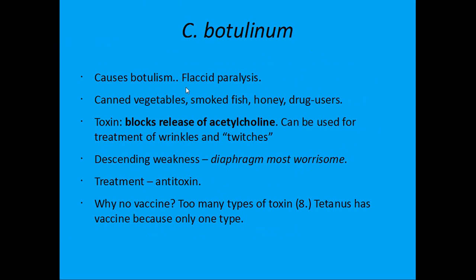Botulism causes flaccid paralysis. Normally, a neuron releases acetylcholine to a muscle, causing it to twitch. Botulism — Botox — prevents this: acetylcholine is not released, so the muscle can't twitch, causing flaccid paralysis. It is associated with canned vegetables, smoked fish, and honey — especially in babies, which is why we don't give babies honey. Botox is also used therapeutically to treat wrinkles and muscle twitches by blocking acetylcholine release.